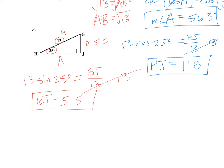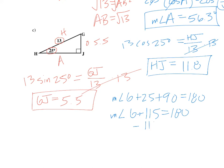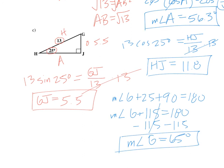We just need the missing angle. Measurement of angle G + 25 + 90 = 180, so angle G + 115 = 180, subtract 115, and angle G equals 65 degrees. We've solved the triangle. If you don't have a clear understanding of the difference between regular trig ratios and inverse trig ratios, please ask for help. If you understand everything, go ahead and begin your assignment.